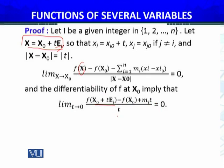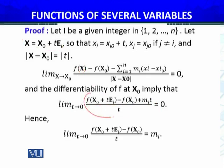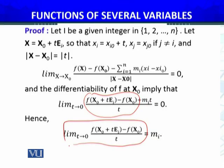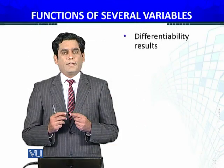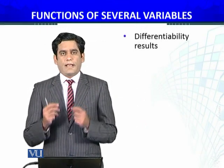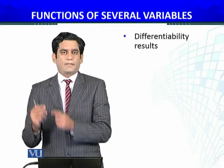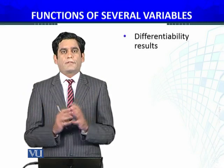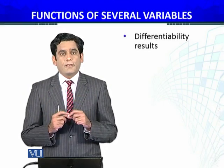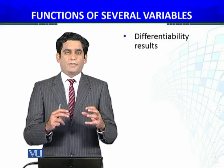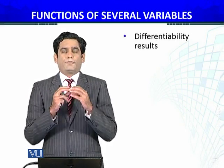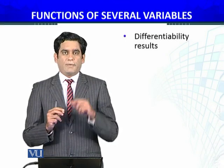The t cancels out, so mi equals limit as t approaches 0 of [f(x0 + tei) - f(x0)] divided by t. This is the partial derivative of f with respect to xi evaluated at x0. So mi equals ∂f/∂xi at x0.